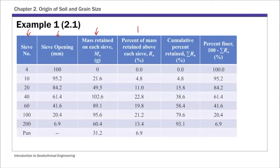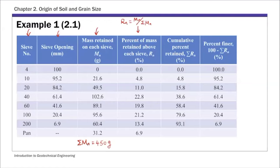The first calculation gives the percent of mass retained above each sieve, called rn. First you need the total mass of your soil sample — for this example, if you sum all the mass retained values, that total is 450 grams. Then the rn value is the mass retained on each sieve divided by the total mass.